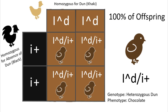The third pairing is a homozygous Dunn bird bred to a black. If you remember, when a bird is homozygous for Dunn, the color is diluted to a light tan color called khaki, meaning this pairing is a khaki bird bred to a black. In this pairing, 100% of offspring should be heterozygous Dunn, or chocolate.